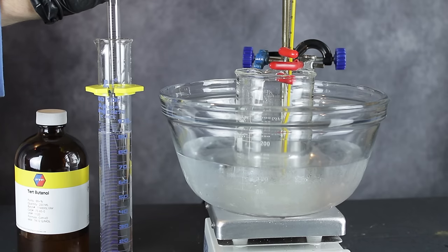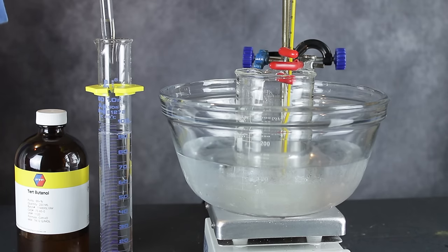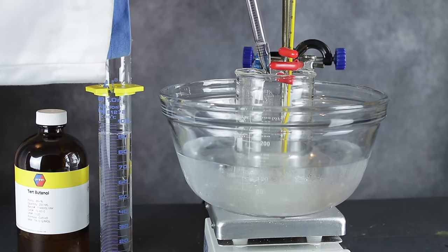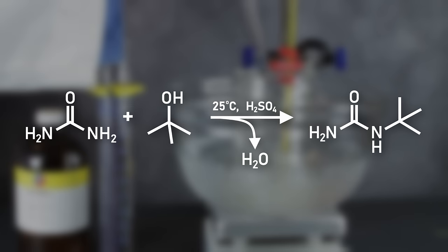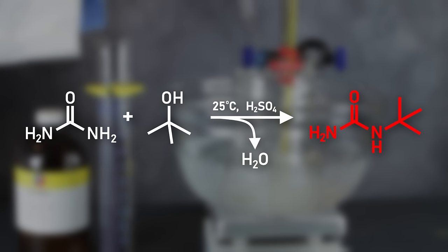After all the urea was in solution, I let the temperature settle to below 10 degrees before slowly dripping in 94 milliliters of tert-butanol. In this part of the reaction, a compound known as tert-butyl urea is formed, which is what will be converted into tert-butylamine later on.